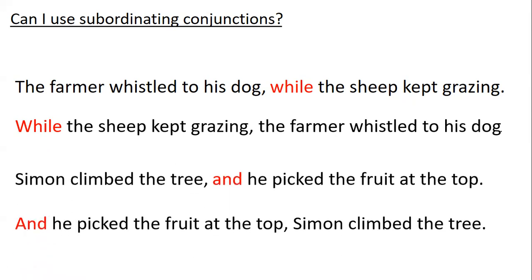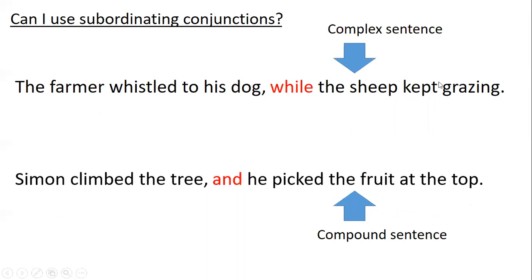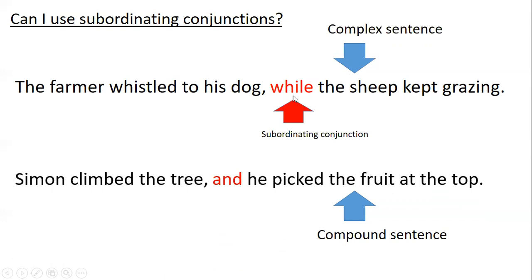There are also compound sentences with coordinating conjunctions such as 'and' and 'but.' With these you can't move them around. For example: 'Silent Simon climbed the tree and he picked the fruit from the top' — you can't say 'And he picked the fruit from the top, Simon climbed the tree,' it doesn't make sense. So the first one is a complex sentence because you can write it in any order, and the bottom one is compound because you can't.